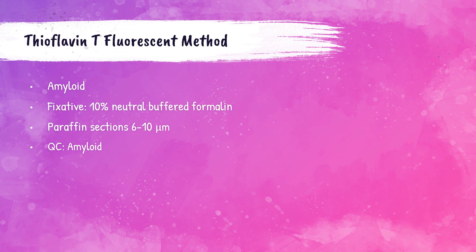The last stain for amyloid is the thioflavin T fluorescent method. This is a decent method for detection of amyloid, but it is not as specific as the Congo red method. Thioflavin T is a fluorescent dye that attaches itself to amyloid in the tissue if present. Tissues need to be cut at 6 to 10 microns in thickness and fixed in 10% neutral buffered formalin. Any tissue containing amyloid can be used for quality control.